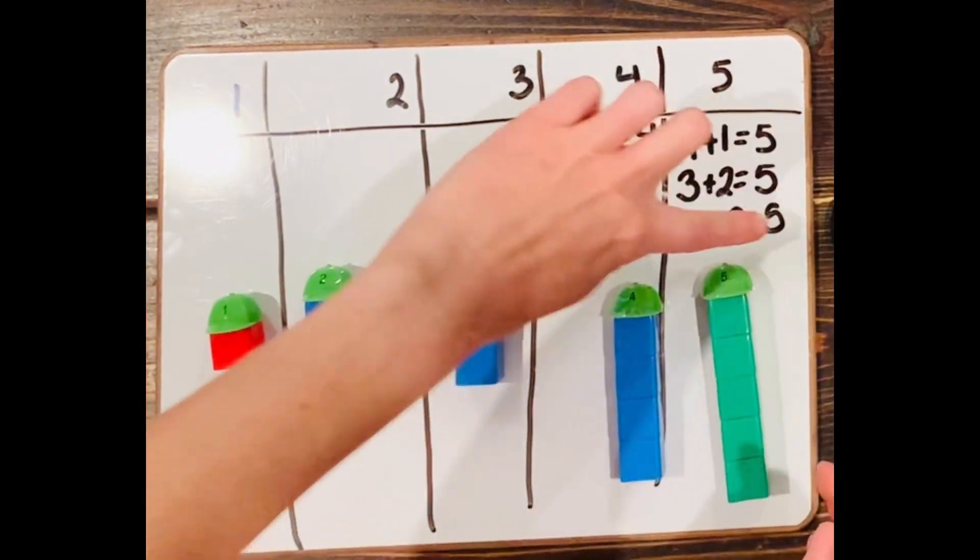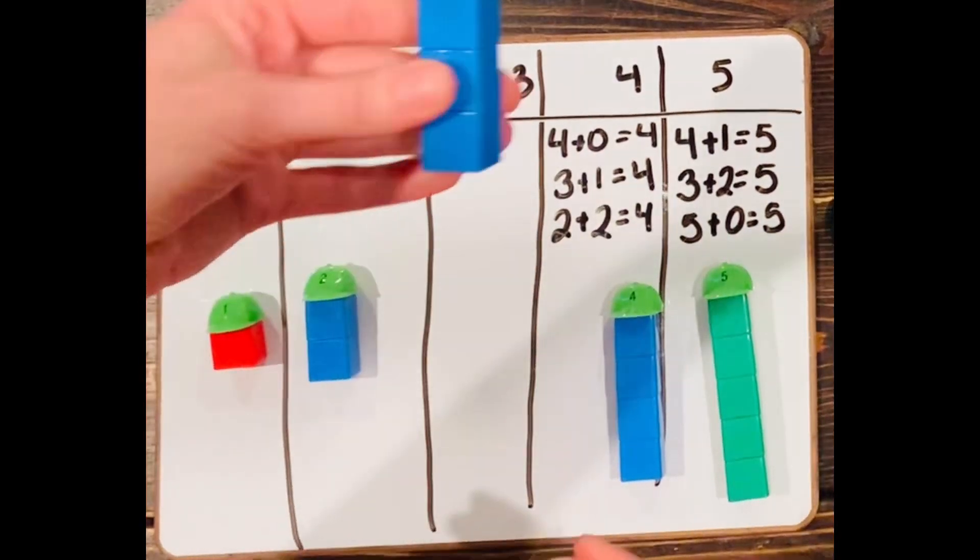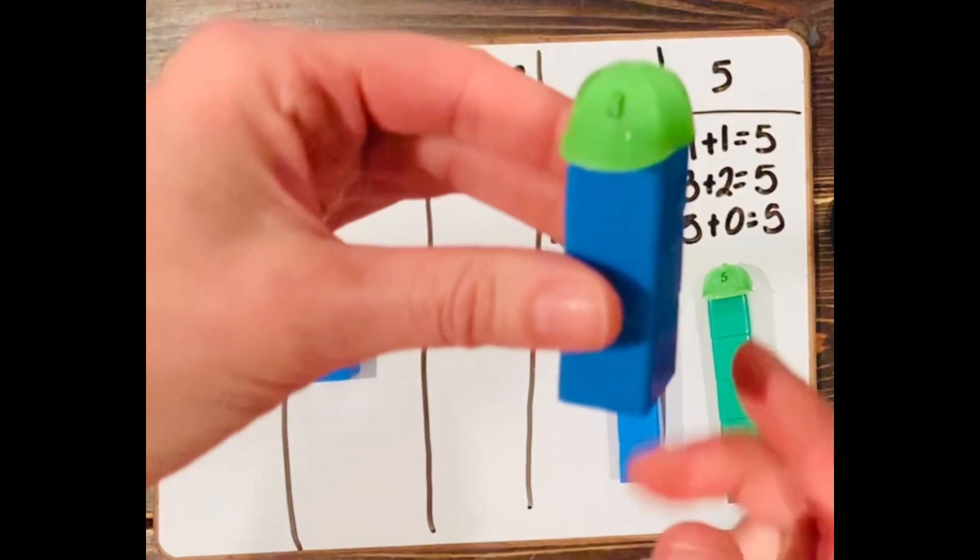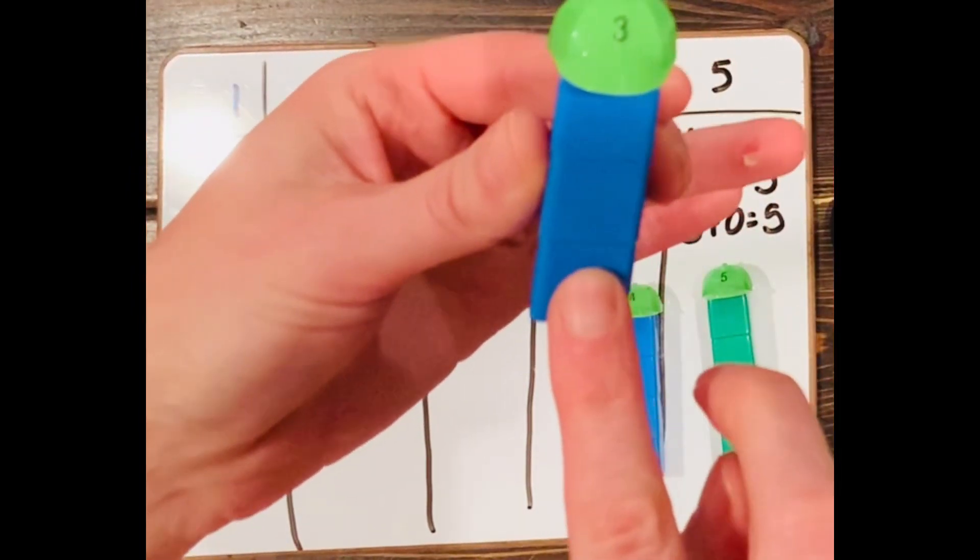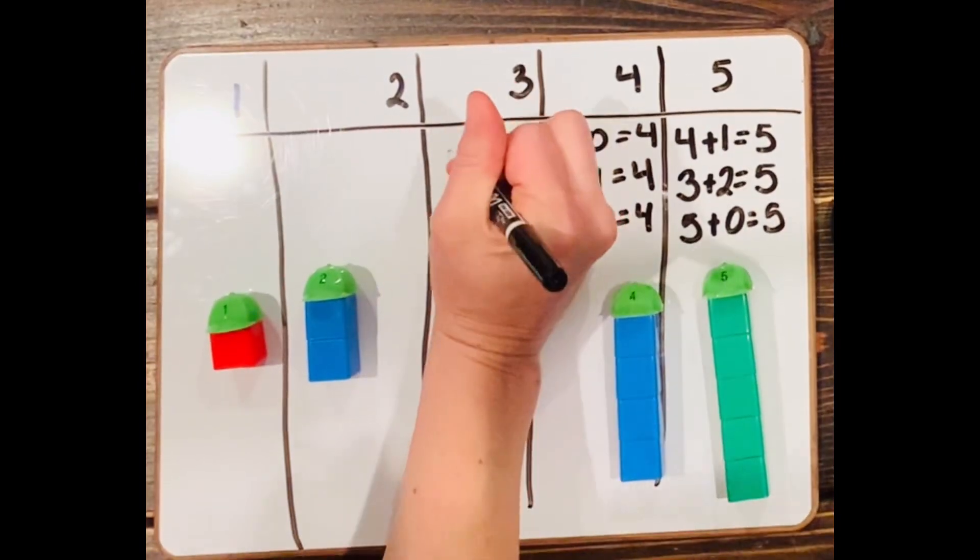And that's as far as I can go with that one. So I have three addition sentences for five, three for four. Let's see how many I can make with the number three. How am I gonna build the number three? You help me. So I have three. And if I add it to zero, I still have three, right? Because zero is nothing.